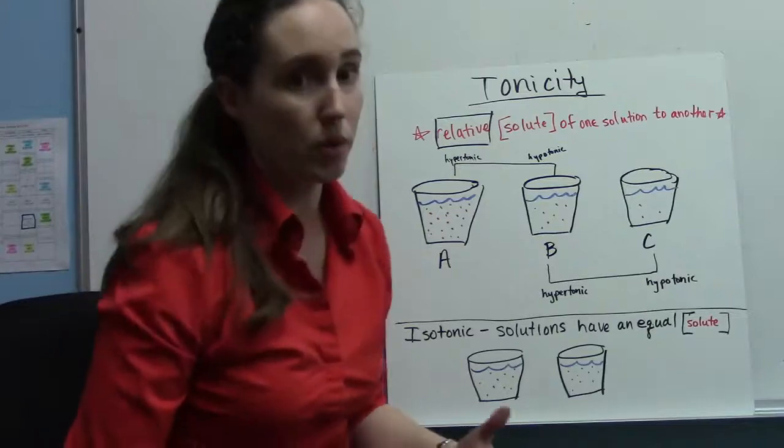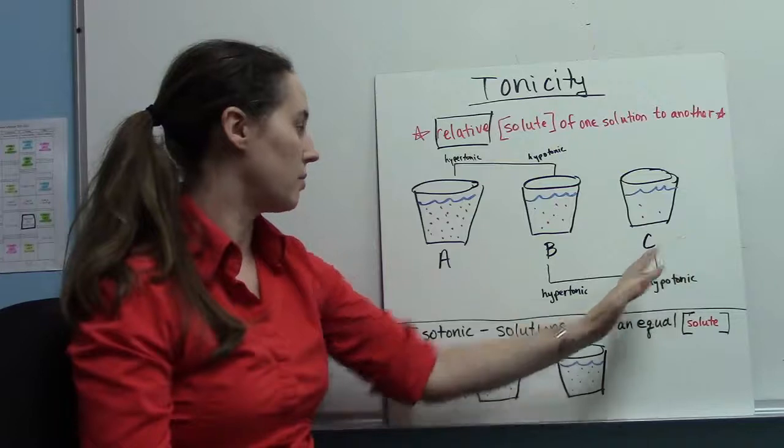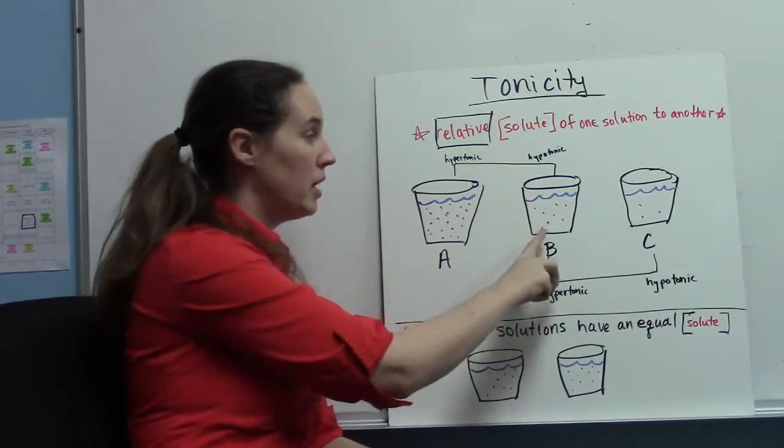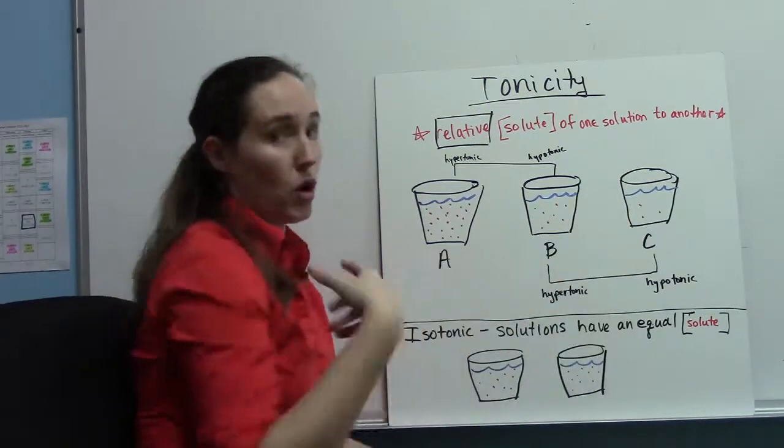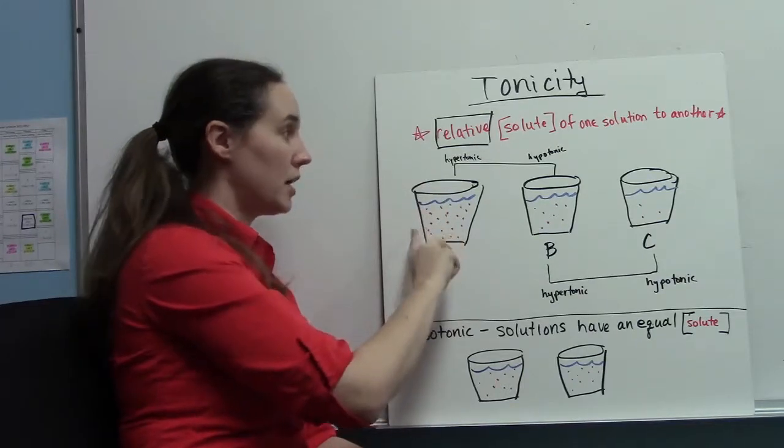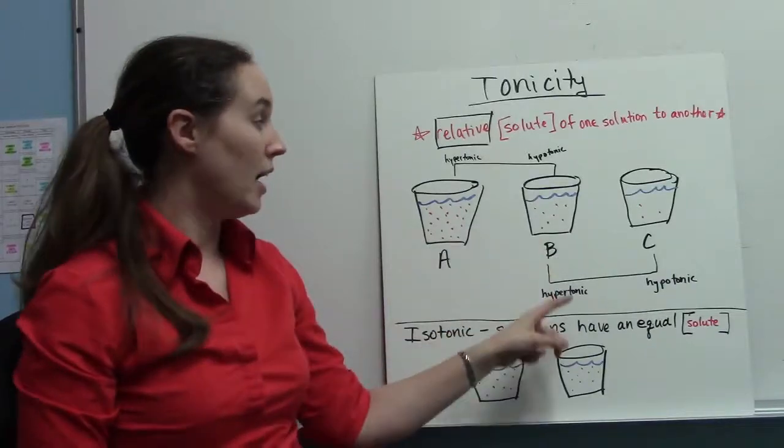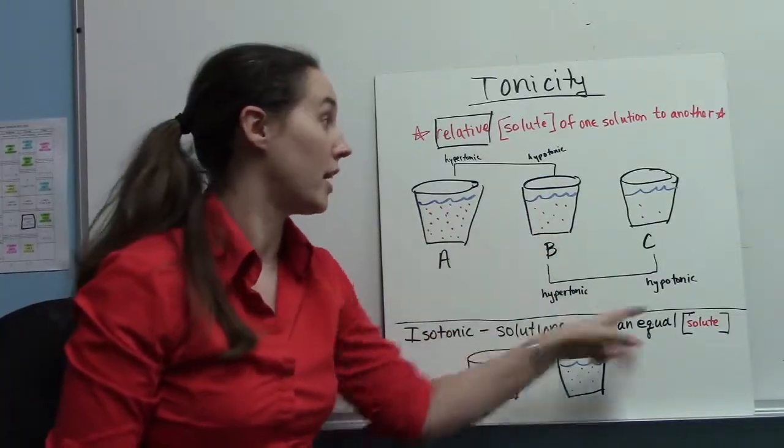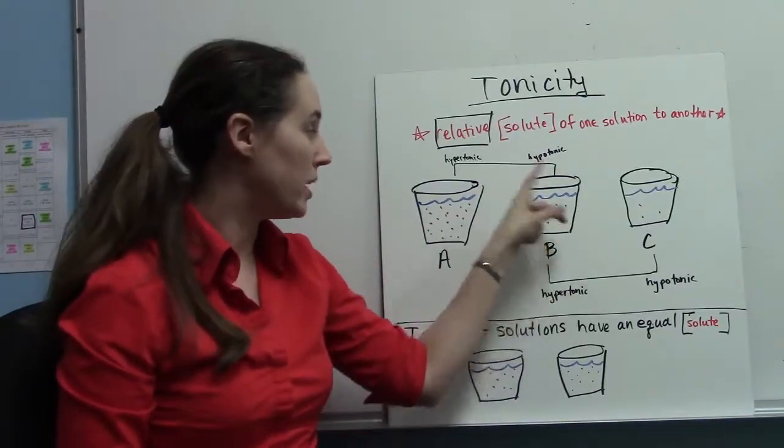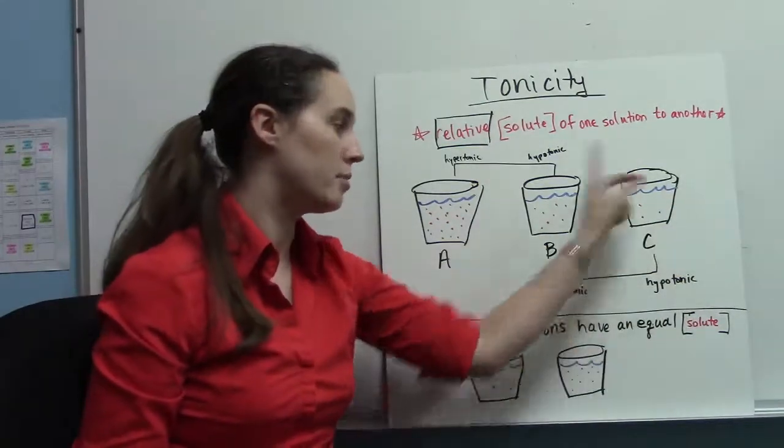And that's important because if we look at these three cups, cups A, B, and C, cup A has a higher solute concentration than cup B. All these have the same volume. So A has a higher solute concentration, so it's hypertonic to B. But cup B has a higher solute concentration than cup C. So in this comparison, the solution in cup B is hypertonic to the solution in cup C.